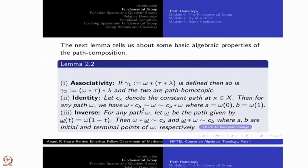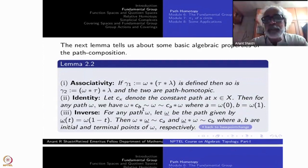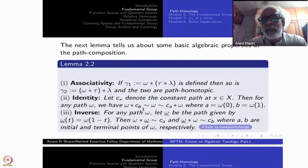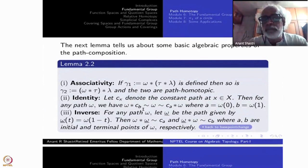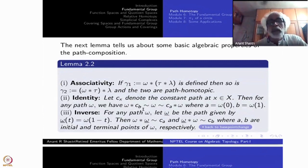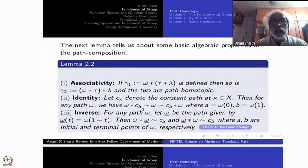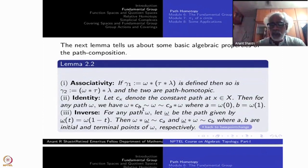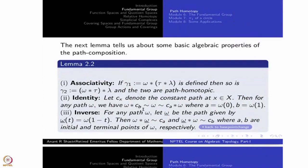All three of these statements can be proved by one single remark: you can get all of them by different reparameterizations. Different reparameterizations of the same path are why they are path homotopic. The left-hand side and right-hand side are different reparameterizations, except for the inverse case. Cases one and two are just different reparameterizations of the same path. Instead of making this seem mysterious, we will just write down the formulas and be done with it.